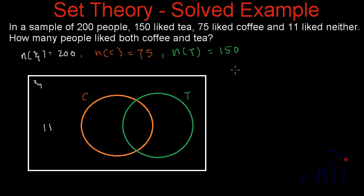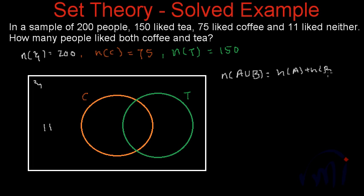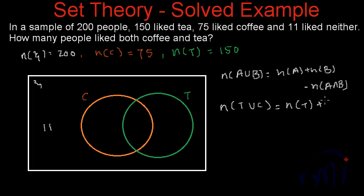The total number of people who liked either tea or coffee is the cardinal number of C union T. The formula is: the cardinal number of A union B equals the cardinal number of A plus the cardinal number of B minus the cardinal number of A intersection B. So the people who like either coffee or tea — T union C — equals N(T) plus N(C) minus N(T intersection C), where T intersection C represents the people who like both tea and coffee.